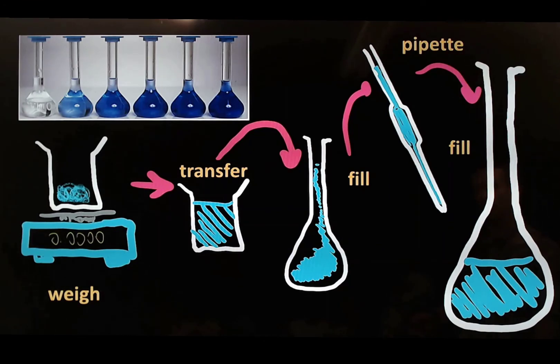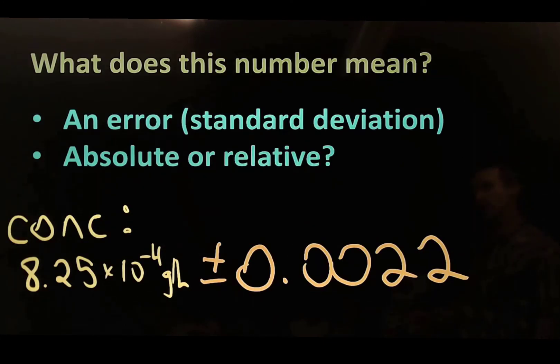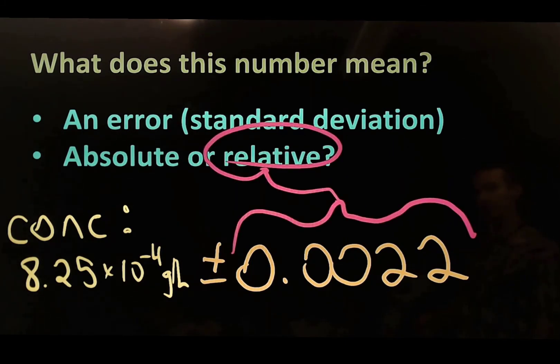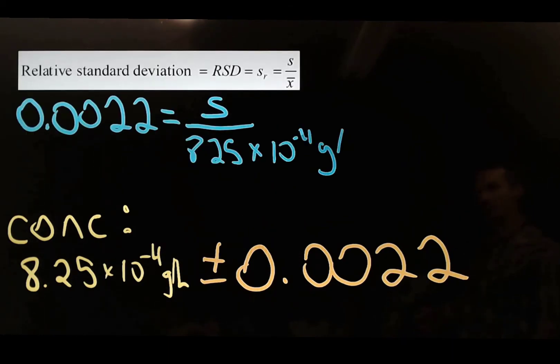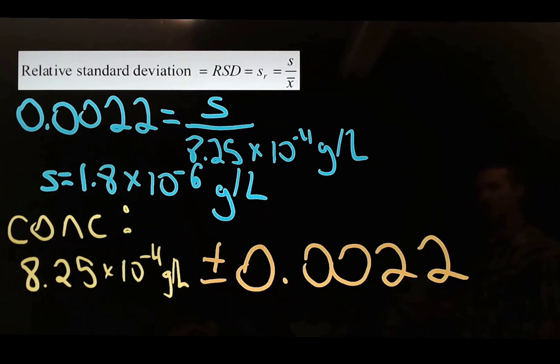And as for which step in the process we've actually calculated, what we've done is we've calculated the uncertainty or the error in that solution right there. So our concentration is already being calculated. We can't simply report this as our value because that's the relative error. So we have to convert this to the absolute error. Here's the equation that we need. So we rearrange and we can calculate the absolute standard deviation.